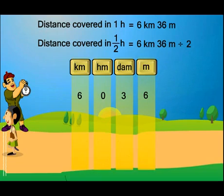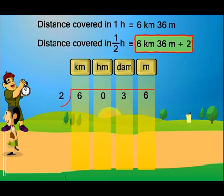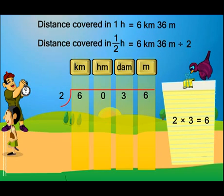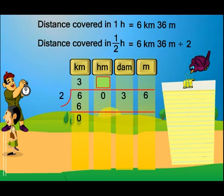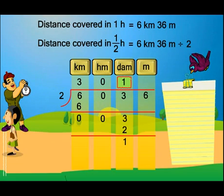Now we are supposed to divide 6 kilometers 36 meters by 2. So let's start with the division. Here we write 2 and now we divide. 2 into 6 is 3. We know this. So we write 3 here. Here it is 0. And here we write 1. The reason? We know that 2 into 1 is 2.